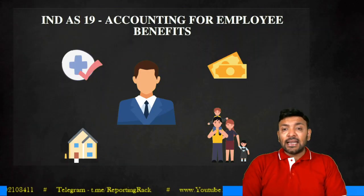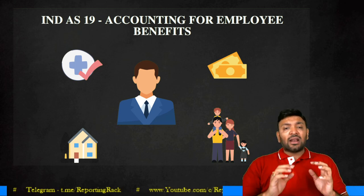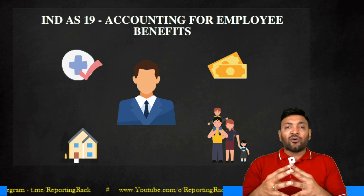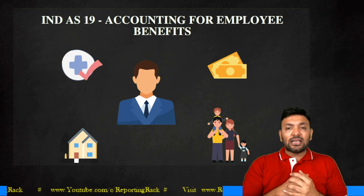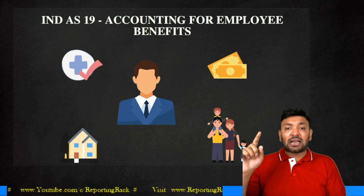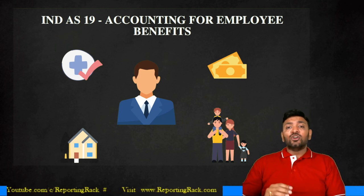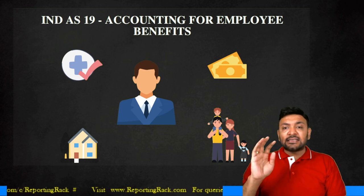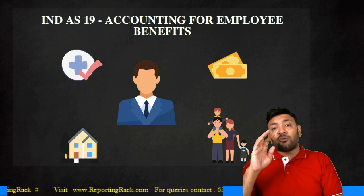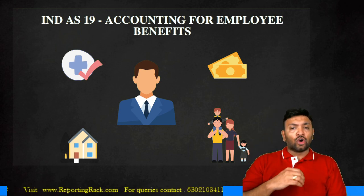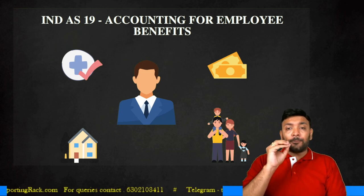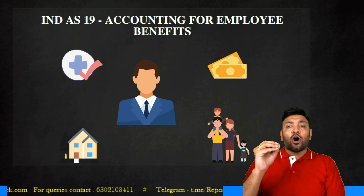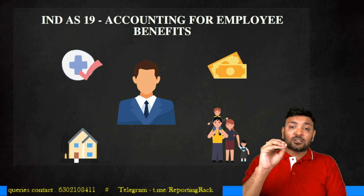Ind AS 19 talks about accounting for employee benefits. First I need to understand who is called an employee, and second, what benefits are included. An employee means it covers both the employee as well as their family. So when I talk about an employee, the benefits arising are not just necessarily directly to the employee but could also provide benefits to the family — the spouse, children, or any other dependent of the employee.